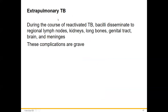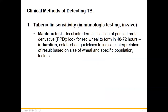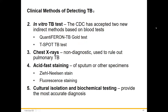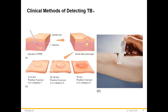Extra-pulmonary TB can affect lymph nodes, kidneys, long bones, GI tract, brain, and meninges — if it reaches those locations, deaths are likely. It's hard to treat if it gets out of the lungs. For testing, they should not ask you about testing methods outside of acid-fast staining — that's a micro-specific topic.